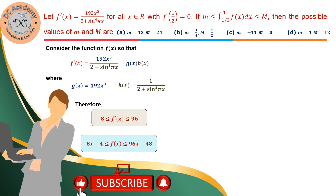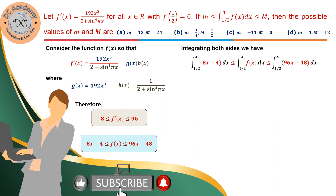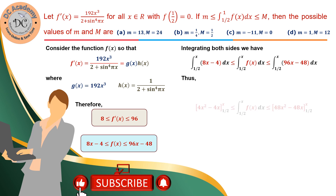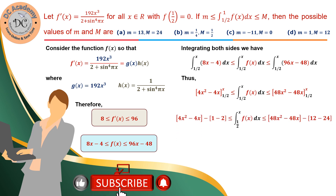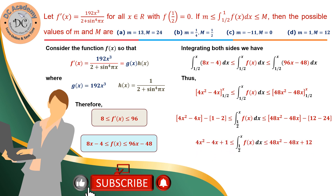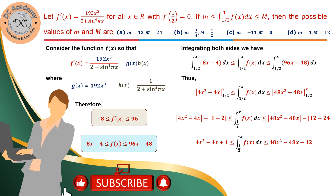Integrating again from 1/2 to x, we integrate 8x − 4 to get 4x² − 4x, and 96x − 48 to get 48x² − 48x. Applying the limits and performing the arithmetic gives 4x² − 4x + 1 ≤ ∫(1/2 to x) f(x)dx ≤ 48x² − 48x + something. Now substituting x = 1 finishes the problem.